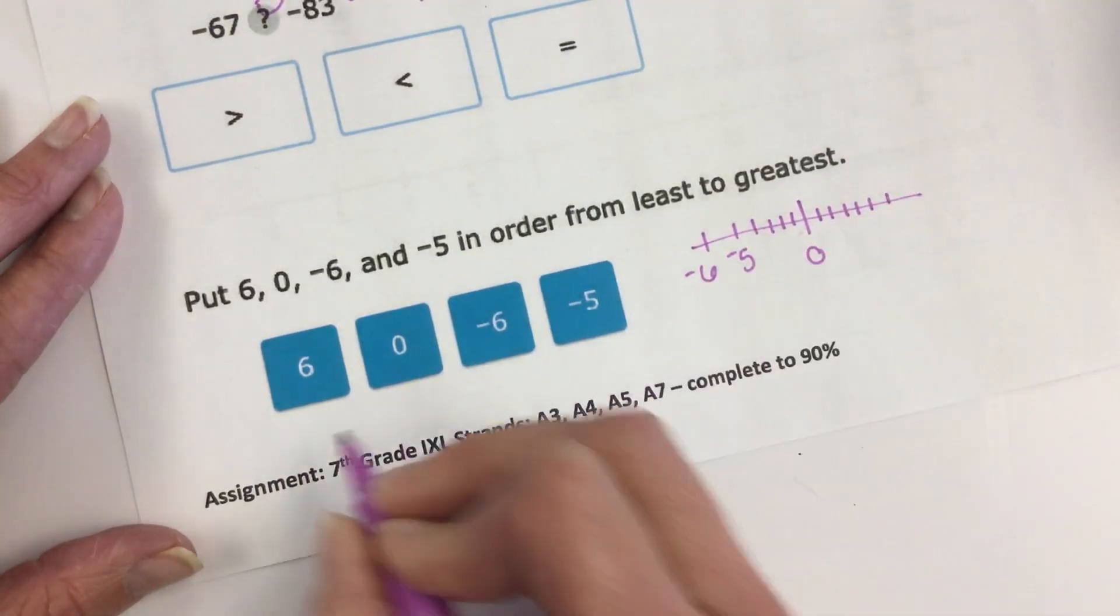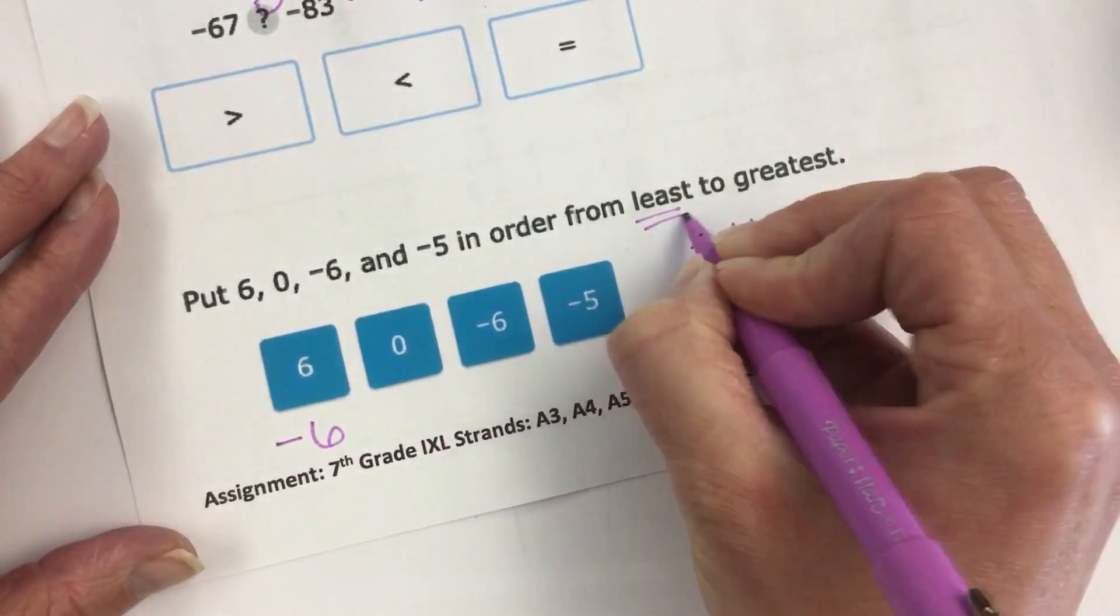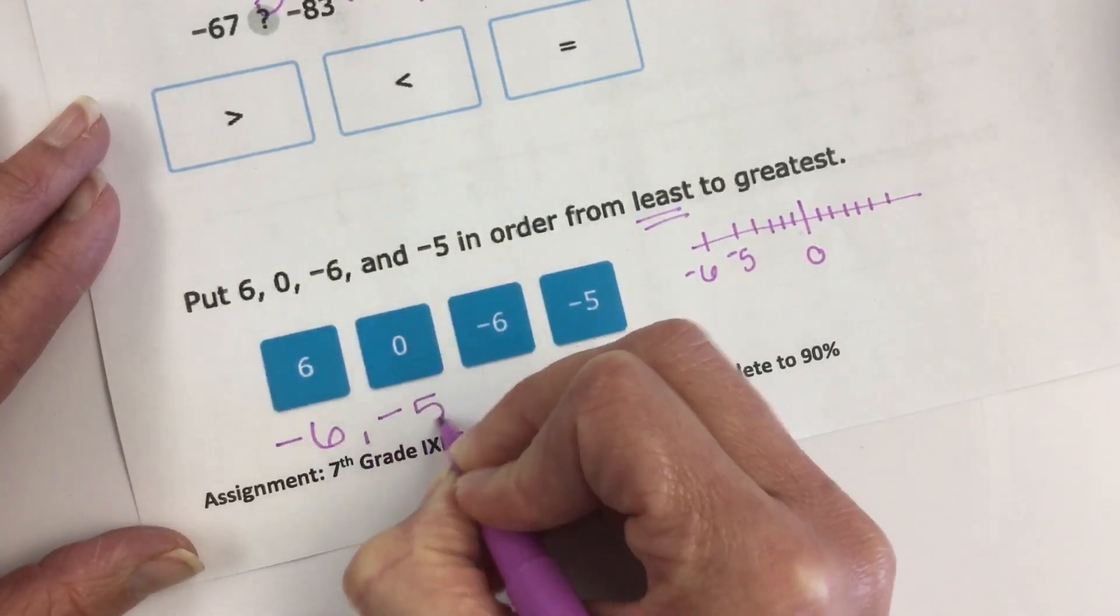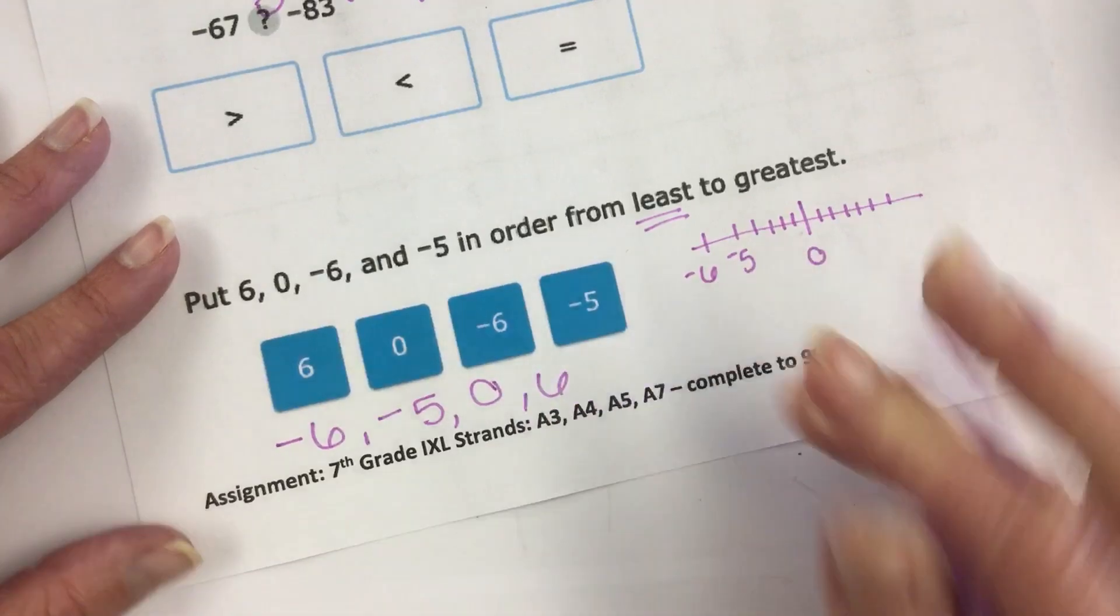So if I were putting these in order, negative 6 would be the least. Then we would have negative 5. Then 0 would come. And then 6 would come.